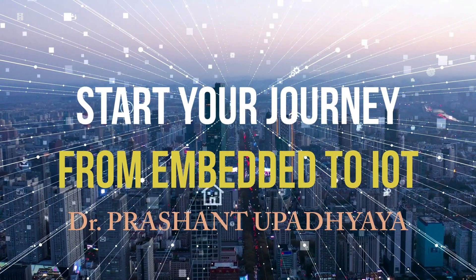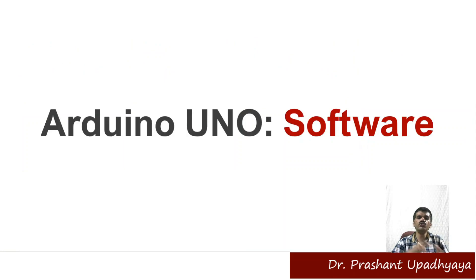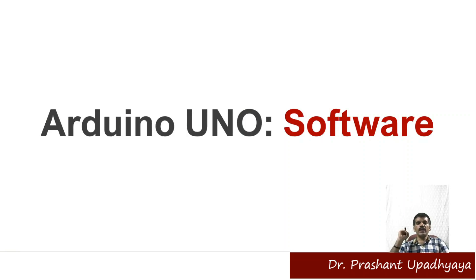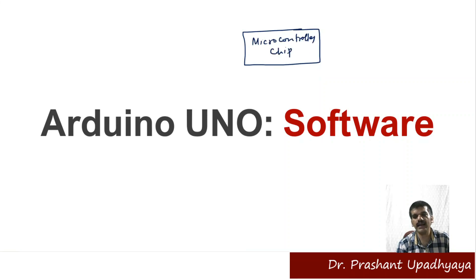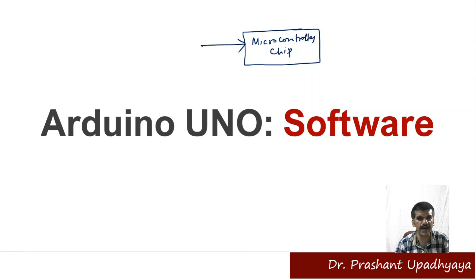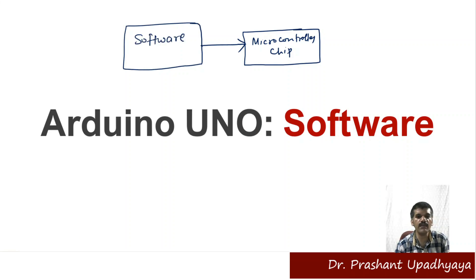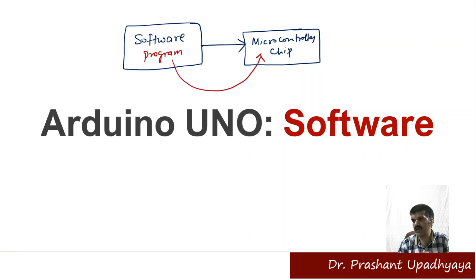Welcome to this course — start your journey from embedded to IoT. When talking about the Arduino UNO software, to write a program for the blinking of an LED, you need to write a program on the microcontroller chip. To do that, you require software where you write your program, and that program gets uploaded onto the microcontroller chip. That software is the Arduino IDE.